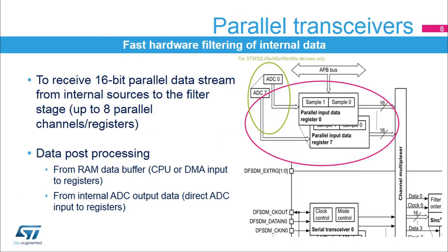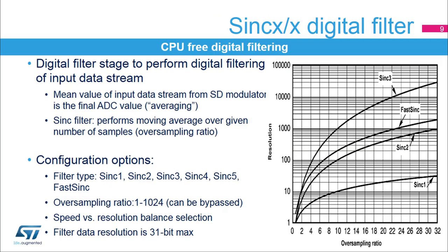Parallel transceivers provide parallel inputs from internal data sources, for example from memory buffers. Parallel inputs are usually used for fast hardware filtering of internal data from the ADC or any data collected from a communication peripheral. Data can be written to the DF-SDM parallel input registers by the CPU or DMA configured in memory-to-memory transfer mode. For STM32L45X, 46X, 49X, 4AX devices, the internal analog-to-digital converters provide parallel data directly to the DF-SDM parallel input registers.